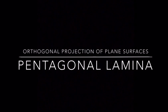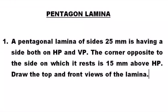Hey everyone, in this video you are going to learn how to project a pentagonal laminar. We have the question here — let me read it out once. A pentagonal laminar of 25 mm side has a side on both VP and HP. The corner opposite to the side on which it rests is 15 mm above HP. Note that the laminar inclination is nowhere given in this problem. So let us note down this data and understand how to solve this problem.